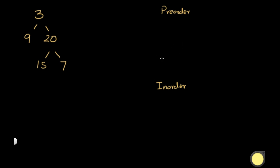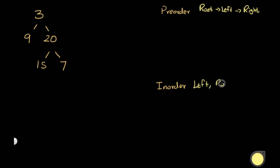In pre-order, we first consider the root, then the left subtree, then the right subtree. For in-order, the pattern is: first we go to the left subtree, then the root, then the right subtree.